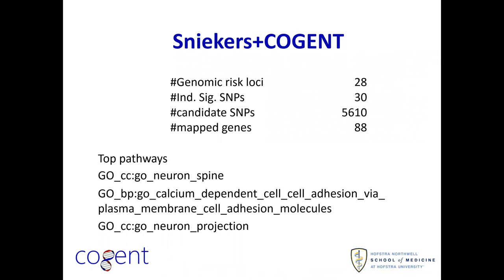Two loci based on conditional analysis had two independent causal SNPs, with about 88 mapped genes within them. The pathway analysis results differed somewhat from the Sniekers paper — neurogenesis was not significant, neurodevelopmental factors were reduced — but we had synaptic-related properties including neuron spine, neuron projection, and calcium-dependent cell adhesion. Calcium channels have been of great interest in psychiatric genomics, and synaptic activity has been a tremendous focus of gene mapping in schizophrenia and other psychiatric disorders.